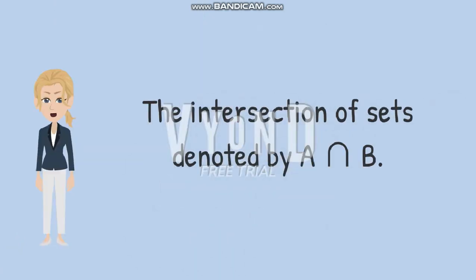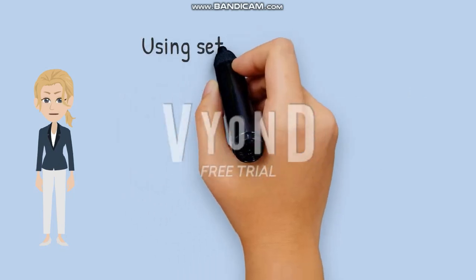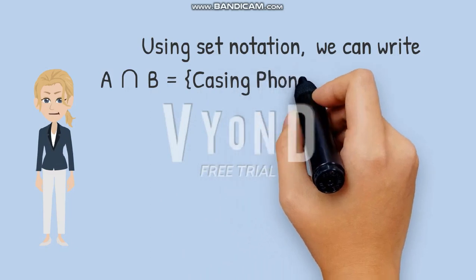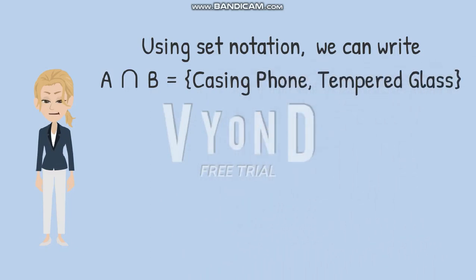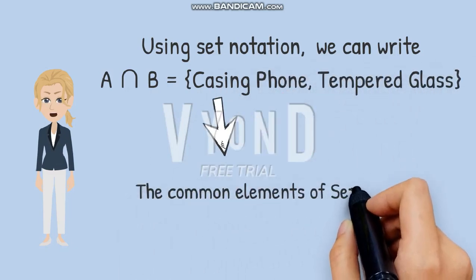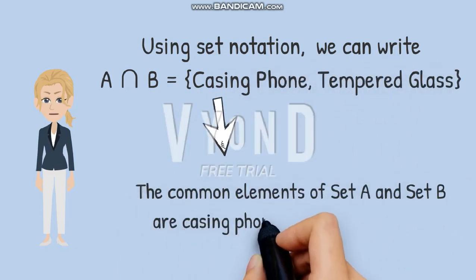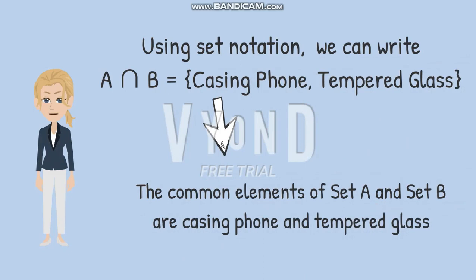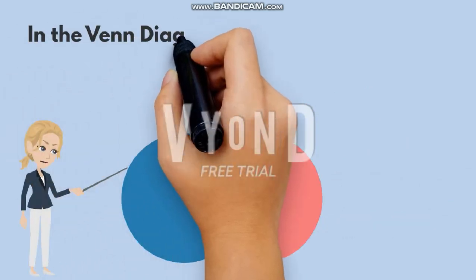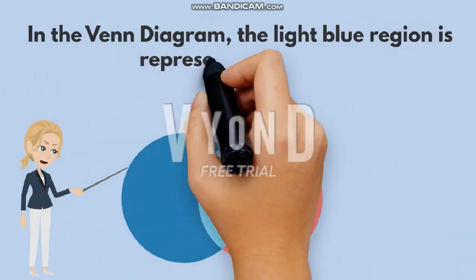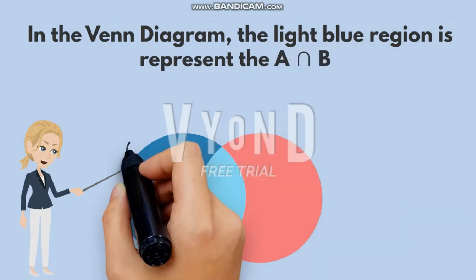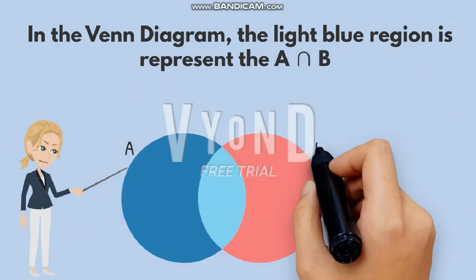The intersection of sets is denoted by a symbol. Using set notation, we can write it. The common elements of set A and set B are casing phone and tempered glass. In the Venn diagram, the highlighted region represents the intersection of set A and set B.